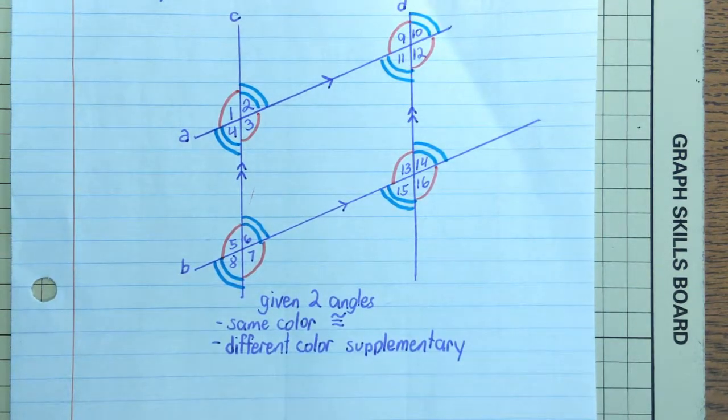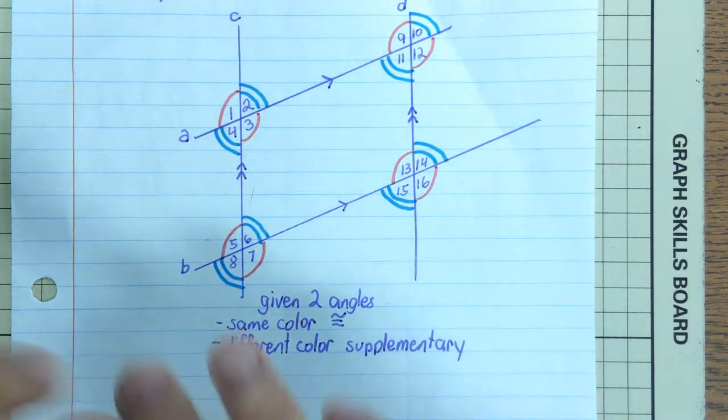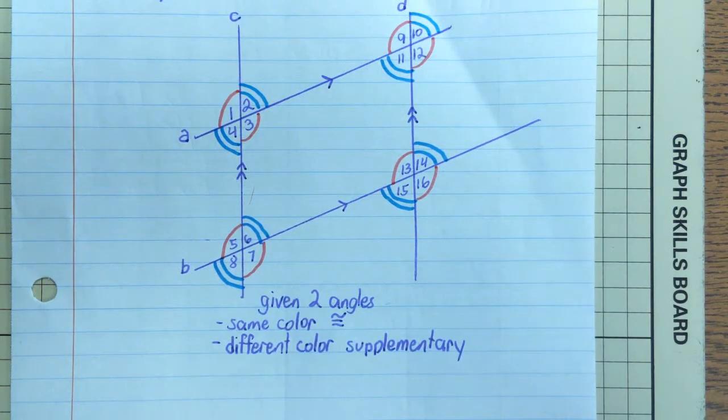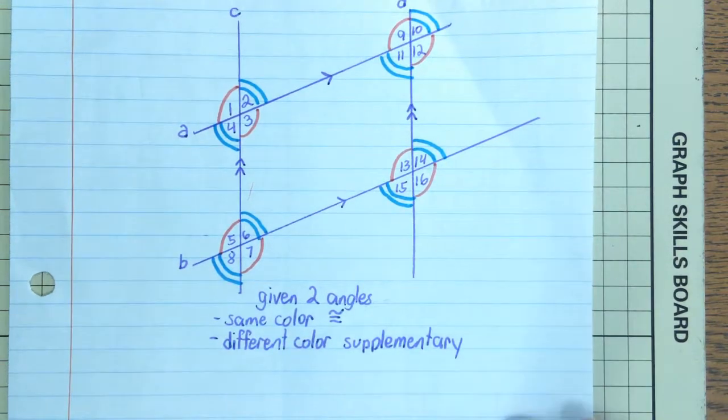So it's important to identify which parallel lines are we talking about when you have all these different numbers going on mixing together. So now let's go to the equations part.